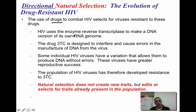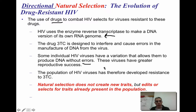HIV uses the enzyme reverse transcriptase to make a DNA version of its own RNA genome. The drug 3TC is designed to interfere and cause errors in the manufacture of that DNA. The problem is that some individual HIV viruses have variation that allows them to produce DNA without the errors. These viruses have greater reproductive success in the infected individual, so the population of HIV viruses can develop resistance to 3TC. Natural selection does not create new traits, but it selects for traits already present in the population.